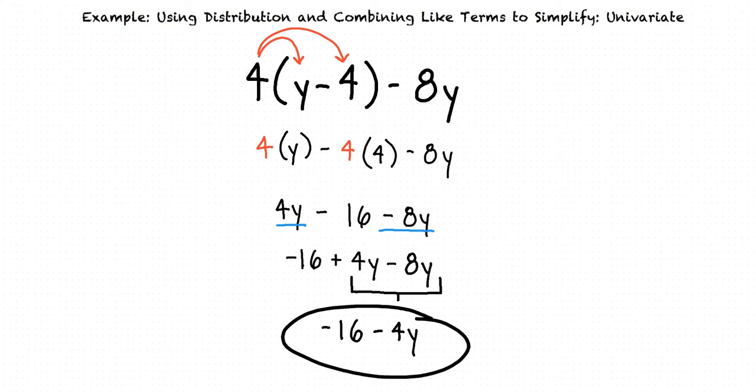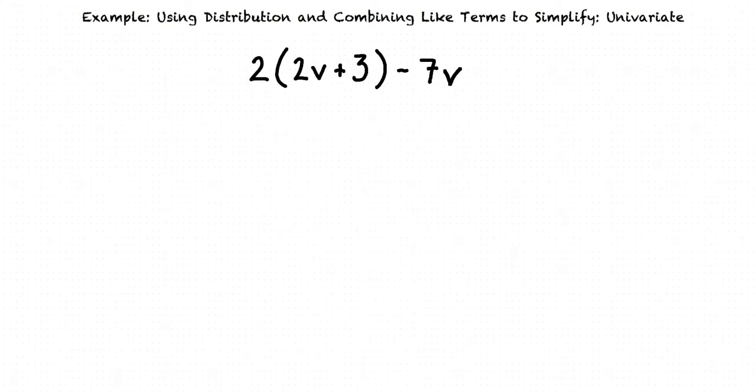Let's consider another example: 2 times the quantity 2v plus 3 minus 7v. To simplify this expression, we will first distribute the 2 to the 2v plus 3 inside the parentheses, like so. This results in 2 times 2v plus 2 times 3 minus 7v.